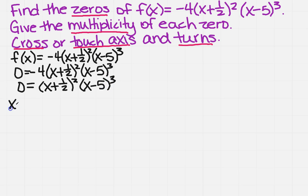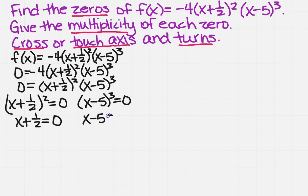So I set each one of them equal to zero. And then I'm going to solve them. Now the kind of cool thing about this one is to get rid of the squared I would take the square root. But the square root of zero is just zero. So I just have to set what's inside the parentheses equal to zero. Same thing over here because this would be a cube root but the cube root of zero is still zero. So I'm going to get x equals negative one half and then I get x equals five. So now these are my zeros.